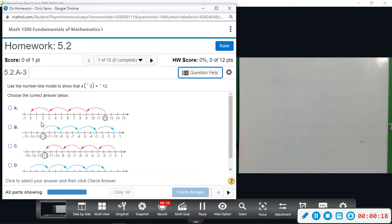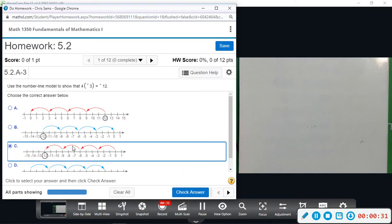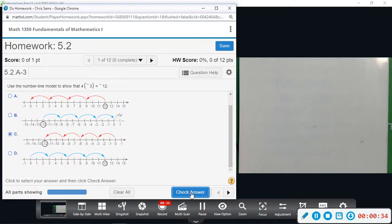So when we do this, we would start at zero and just show four jumps of negative three. Negative three is the one that's grouped, so we're going four groups of three to the left, ending at negative twelve. C is the one that displays that.